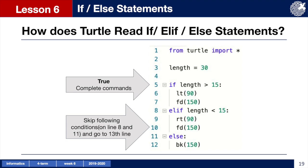Now, let's break down the different scenarios in this code. Our length variable has been set to 30. Python turtle checks the first condition, which is length is more than 15, which is true. Our turtle completes the commands indented beneath. Once these commands are completed, the turtle skips the other conditions and completes the code found below the if-else statement.